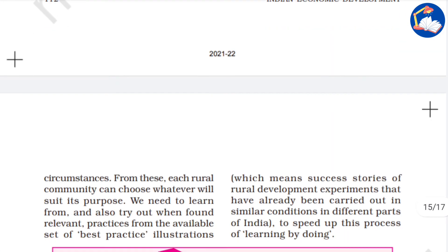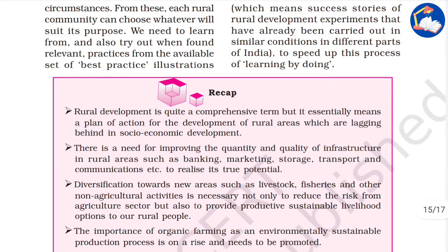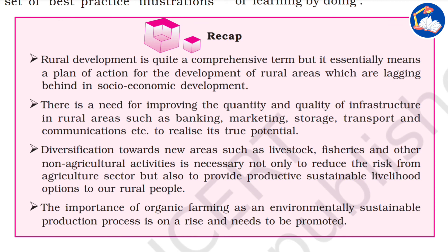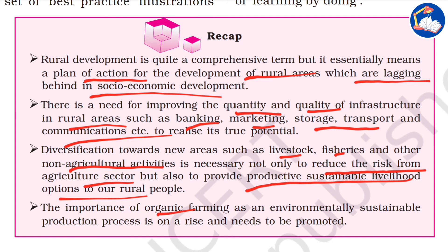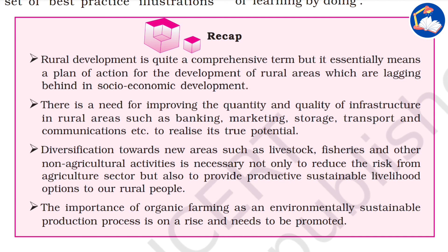To recap, rural development is a comprehensive term that essentially means a plan of action for the development of rural areas which are lagging behind in socioeconomic development. There is a need for improving the quantity and quality of infrastructure in rural areas such as banking, marketing, storage, transport, and communications. Diversification towards livestock, fisheries, and other non-agriculture activities is necessary to reduce risk and provide sustainable livelihoods. The importance of organic farming as an environmentally sustainable production process is on the rise and needs to be promoted.